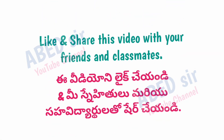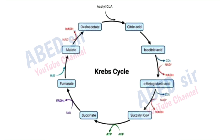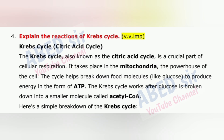Next important question is 4: Explain the reactions of the Krebs cycle. The Krebs cycle, also known as the citric acid cycle, is a crucial part of cellular respiration. It takes place in the mitochondria, the powerhouse of the cell. The cycle helps break down food molecules, like glucose, to produce energy in the form of ATP. The Krebs cycle works after glucose is broken down into a smaller molecule called acetyl-CoA.